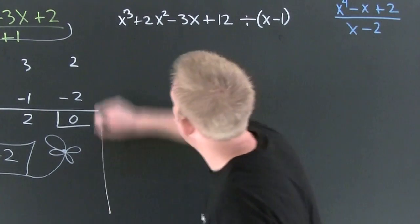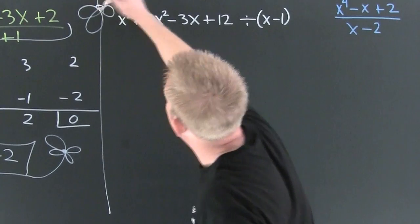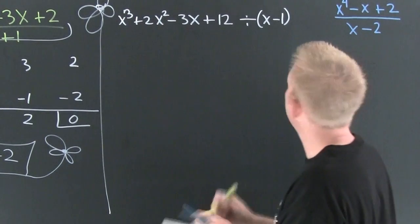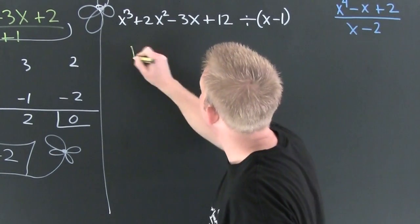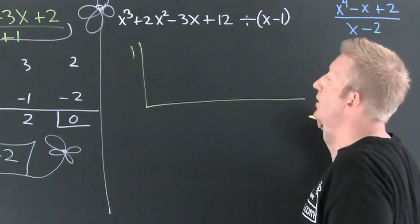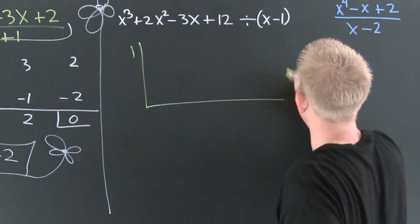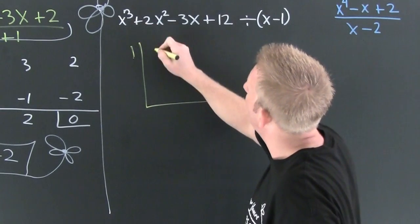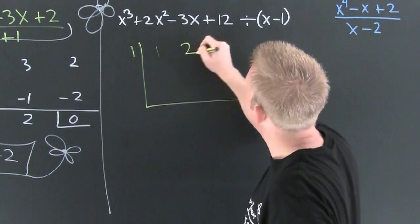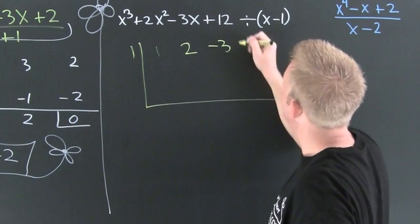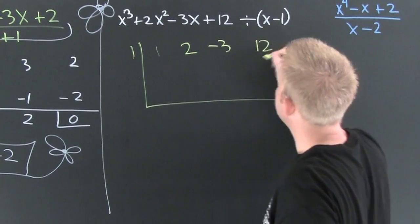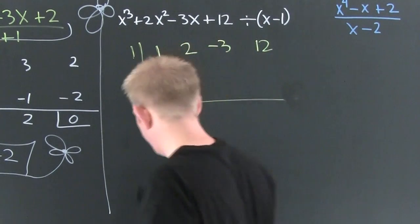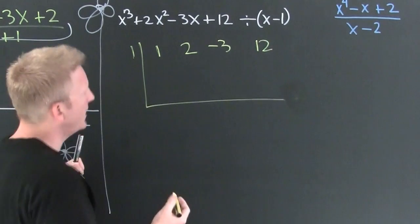In a different color, 1 is on the outside. What goes on the inside? My coefficients. A 1 goes in there, a 2 goes in there, a minus 3 goes in there, and a 12 goes in there.